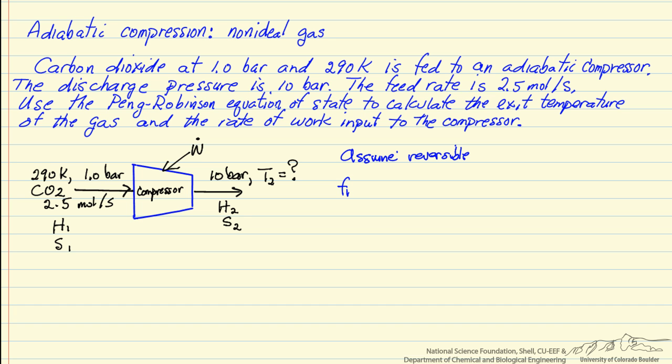We know it's adiabatic, so if we write down the first law for this system, and we're running this at steady state as we like to run a compressor, the general first law says the change in internal energy with respect to time is equal to N dot (molar flow rate in) times enthalpy per mole, minus molar flow rate out (which in this case is the same because we're at steady state) times the enthalpy per mole out, plus Q dot plus W dot. This is zero because it's steady state, this is zero because it's adiabatic, and so we have an equation for the rate that we're adding work to the system.